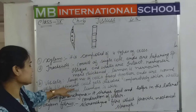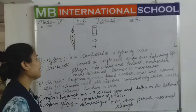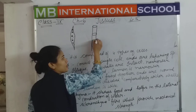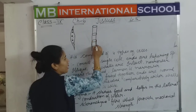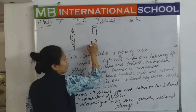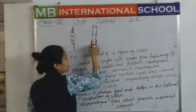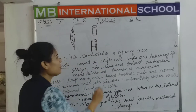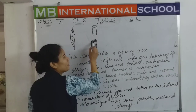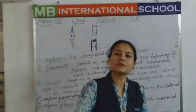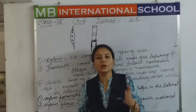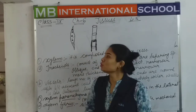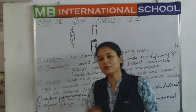The septa between adjacent cells get dissolved. Wherever the second cell is attached, that dividing wall — the septum — dissolves, so we cannot find out exactly where one cell ends and the next begins. The differentiation between adjacent cells is not visible.